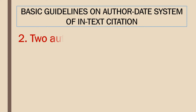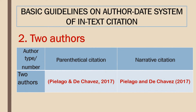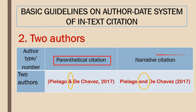Two authors: generally the rules are the same as with one author. However, you should bear in mind when to use the full word AND versus the symbol ampersand. In parenthetical citation, ampersand is used between two authors, while the word AND is used in narrative citation.